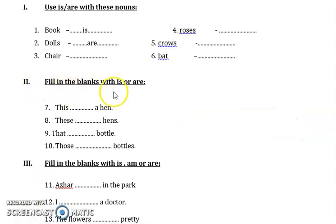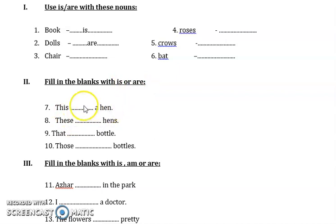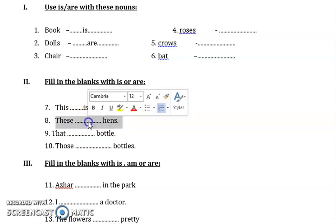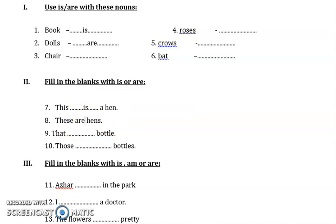Next, fill in the blanks with is or are. This dash a hen — you have only one hen, so the answer is is. These dash hens — you have many, so the answer is are.